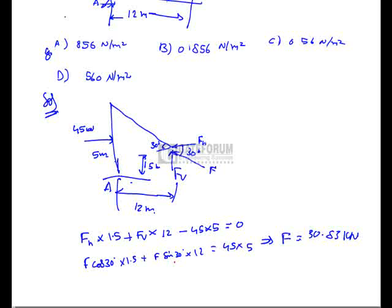The compressive stress induced in the shore is σ_C = F/A, which is 30.83 × 10³ by 36, equal to 856 N per meter square. So the right option is A, A is the right answer.